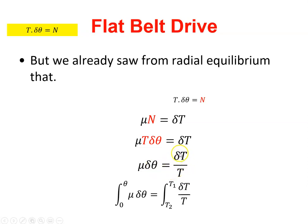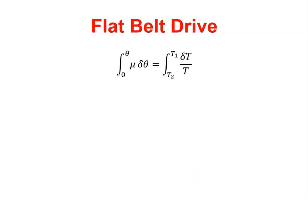And then to get rid of the differentials, we integrate. So I'm going to integrate between 0 and θ, and between T2 and T1. Okay, so there's the integral. When I integrate μ with respect to θ, I get μ times θ. I put in θ for θ, and I get μθ. When I integrate 1 over T times DT, I get the natural log of T.